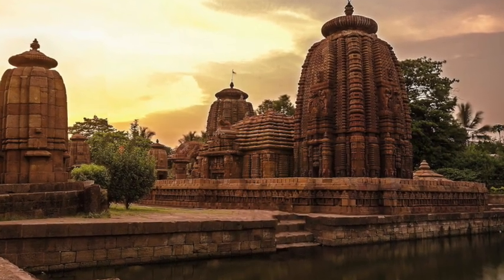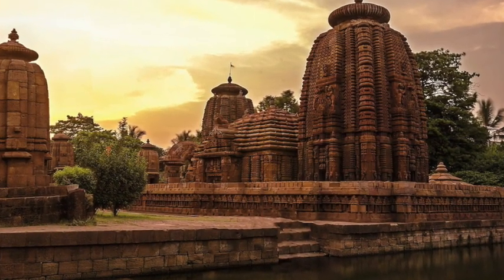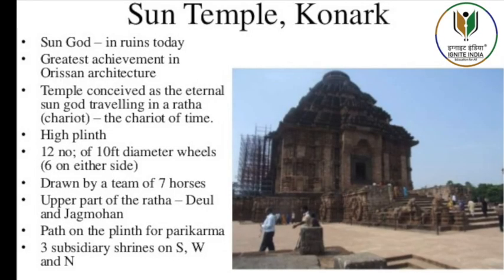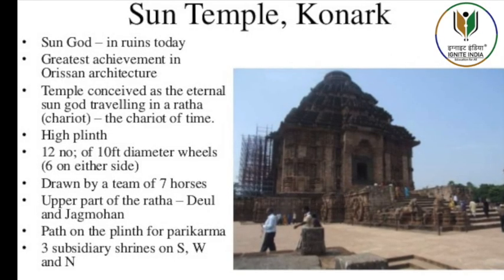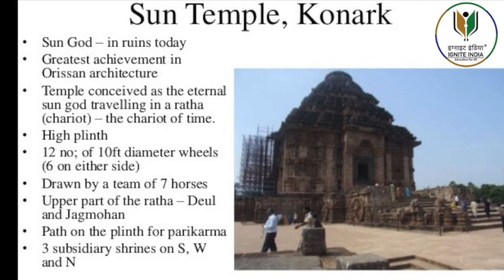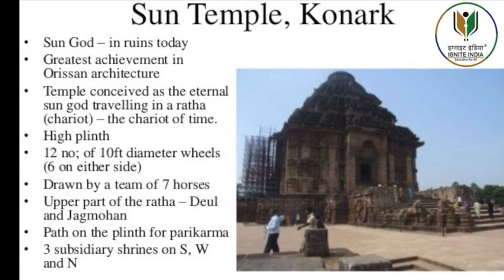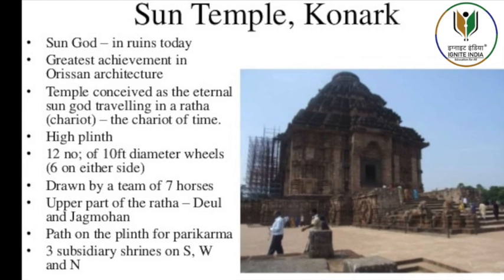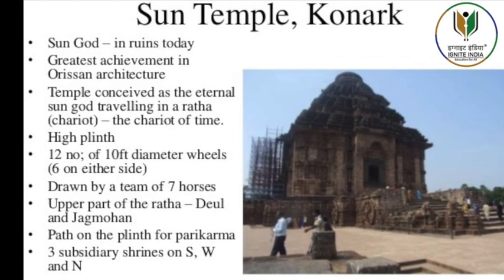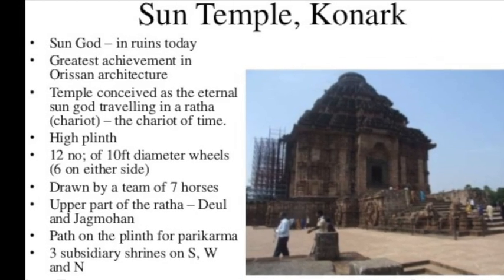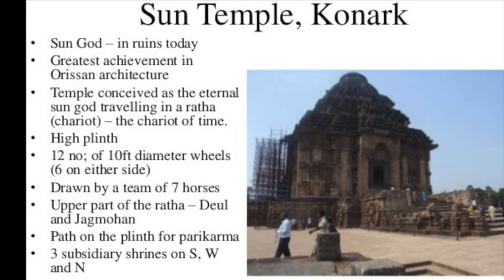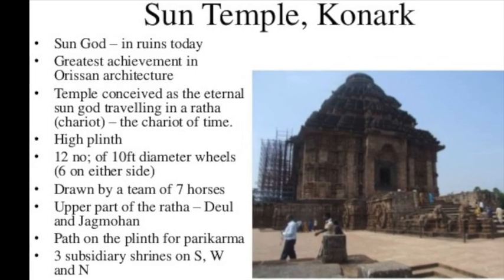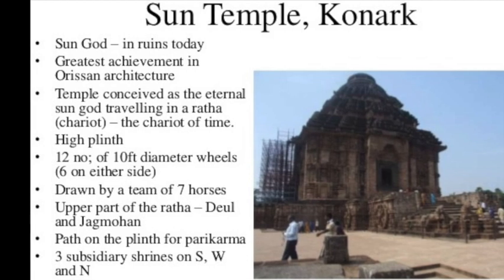At Konark, on the shores of the Bay of Bengal, lie the ruins of the Surya or Sun Temple built in stone around 1240. The Sun Temple is set on a high base, its walls covered in extensive, detailed ornamental carving. These include twelve pairs of enormous wheels sculpted with spokes and hubs representing the chariot wheels of the Sun God.